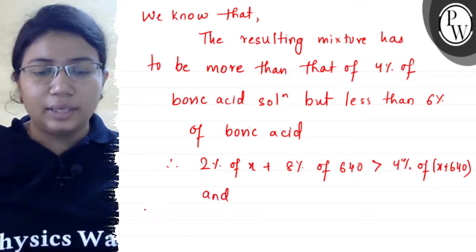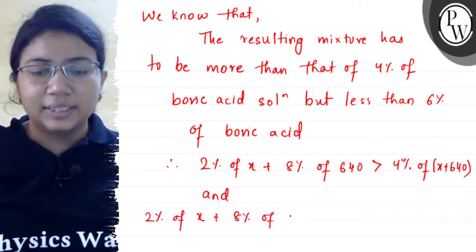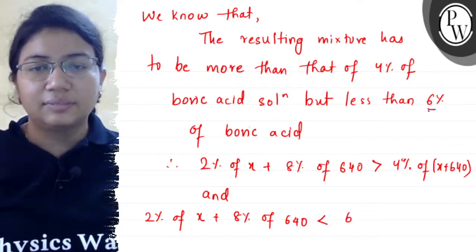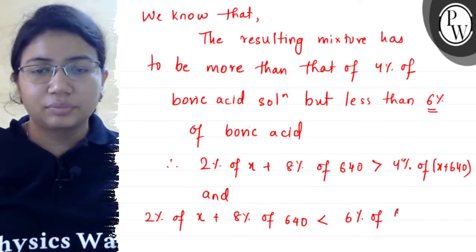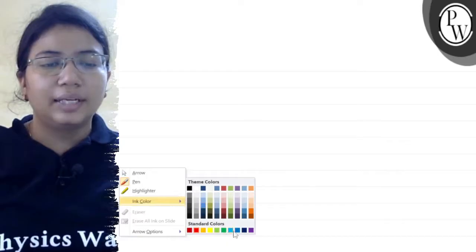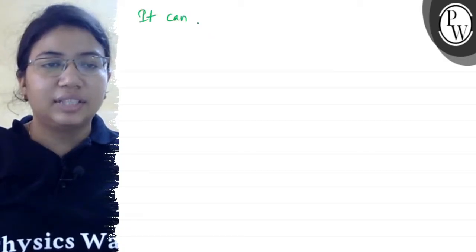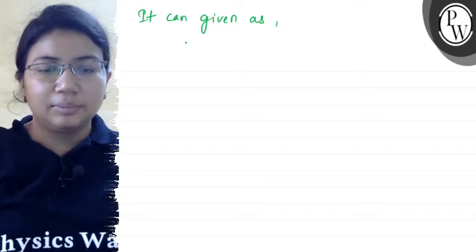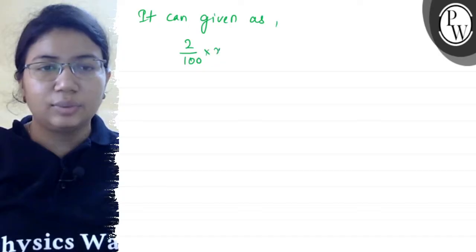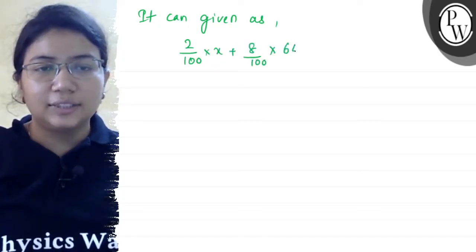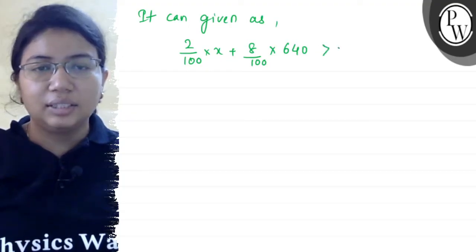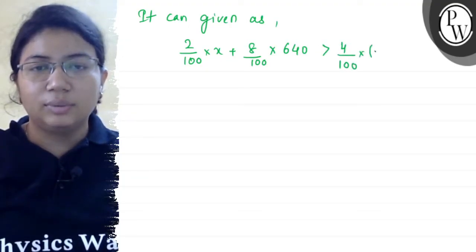And the second inequality: 2% of x plus 8% of 640 is less than 6% of (x + 640). This can be written in mathematical form as: 2/100 · x + 8/100 · 640 is greater than 4/100 · (x + 640).